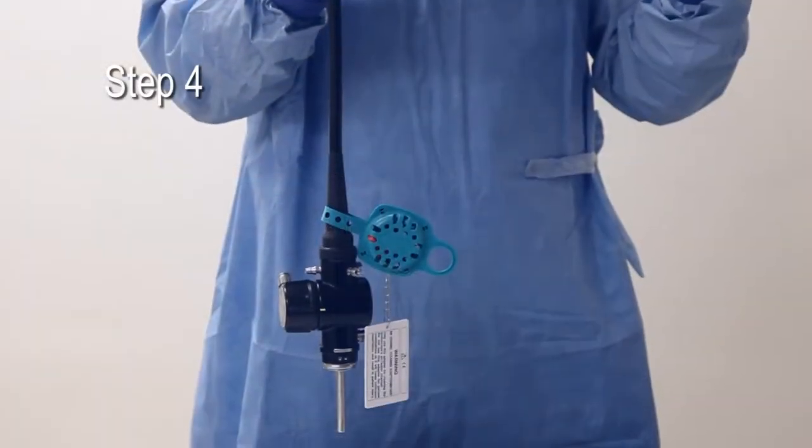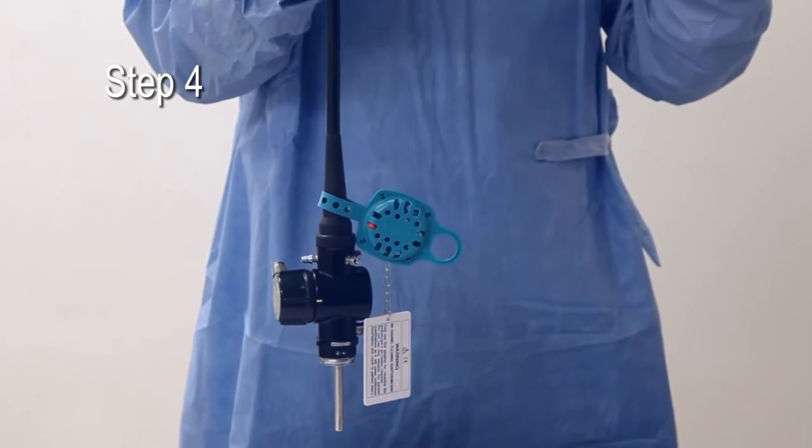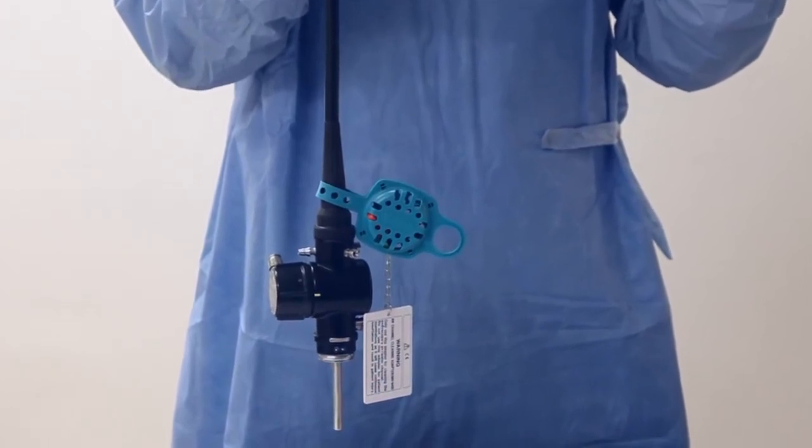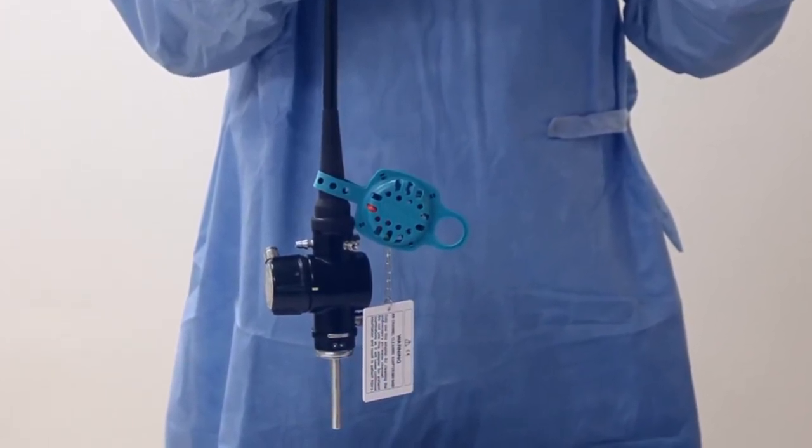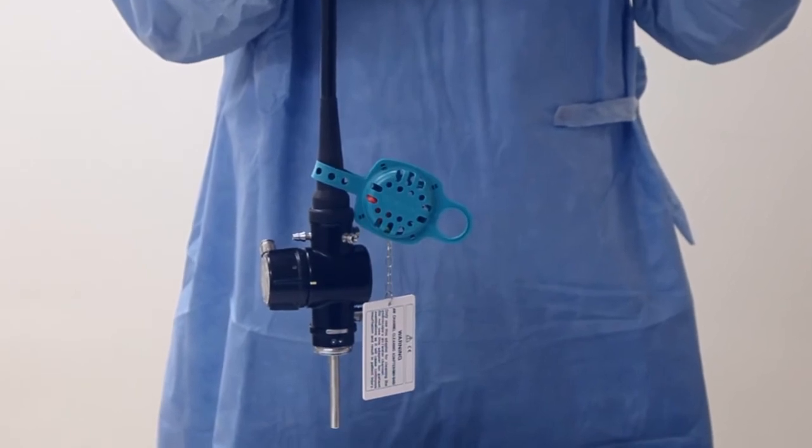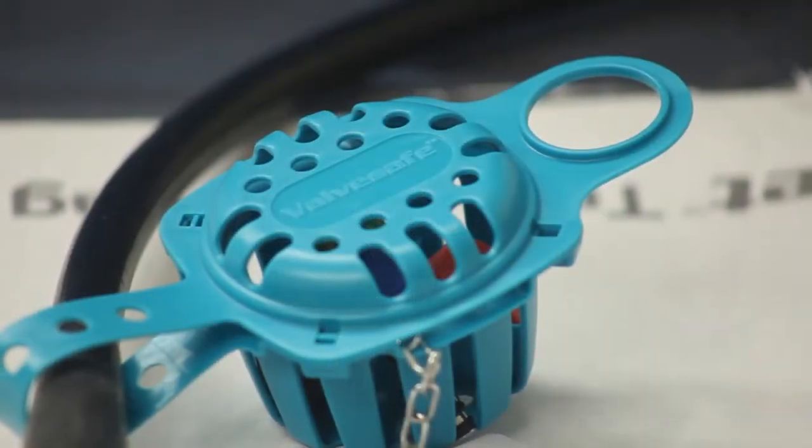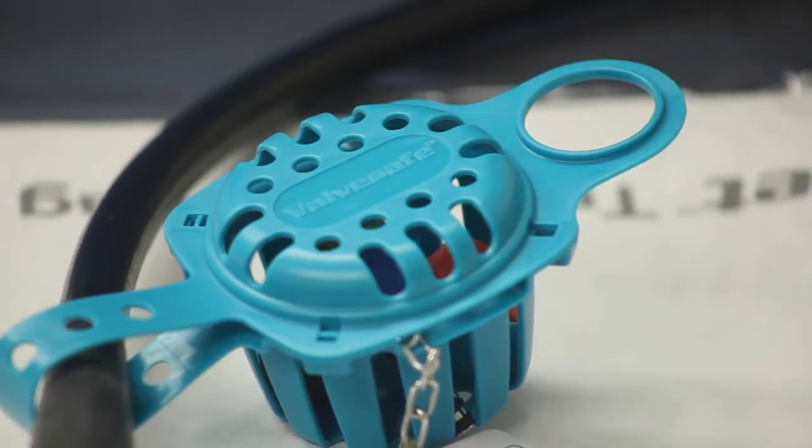Reprocess the scope and place it in a drying cabinet if necessary. It should be noted that the ValveSafe and the valves now stay with the endoscope as a unique set through the remainder of the decontamination process. ValveSafe also protects the valves through the decontamination cycle.